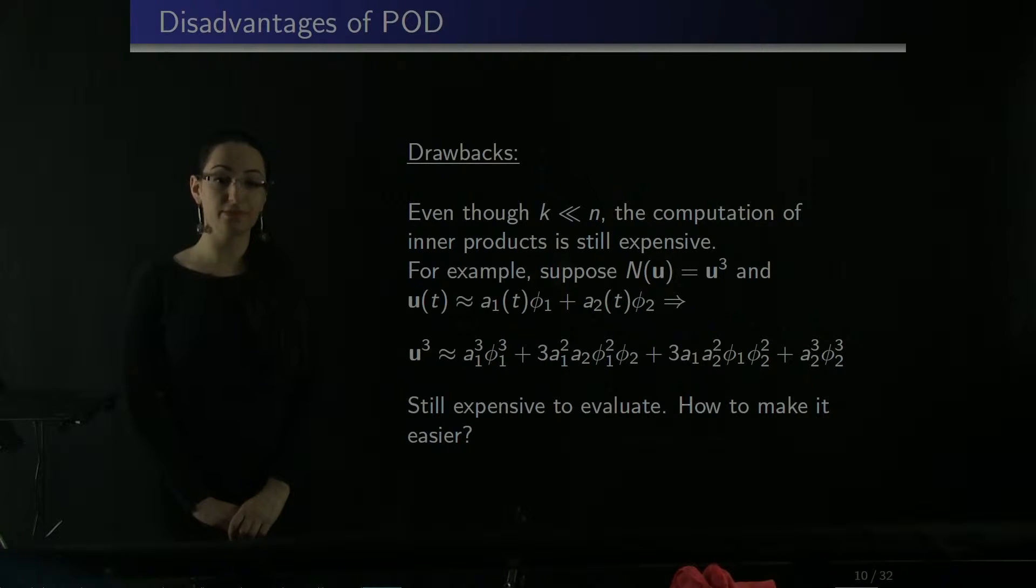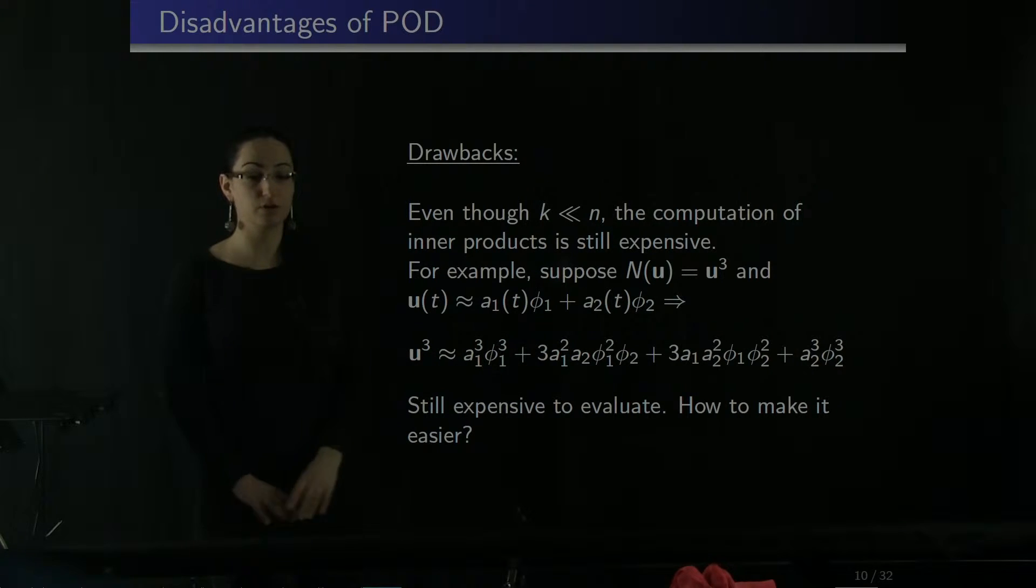However, this method has its own drawbacks. Let's consider a very simple case when the nonlinearity is simply U cubed and we have only two mode expansion. Then, in order to compute U cubed, we have to compute all those inner products. Remember that each of these phi vectors is n-dimensional, large-dimensional. So computing all those inner products is expensive.